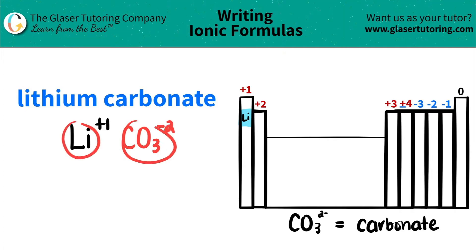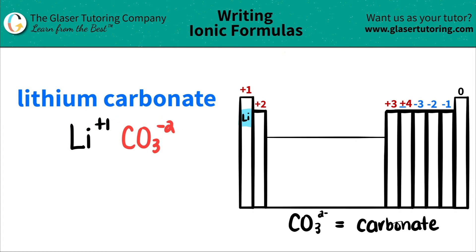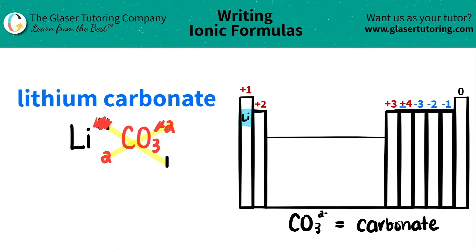Now I have both components and both charges. We do a little trick where we crisscross the charges to determine how many of each component we need. So this plus one crisscrosses down, telling me I only need one of the carbonates. And this negative two crisscrosses down, telling me I need two of the lithiums. When you do this crisscrossing, don't worry about the positives or negatives — just write out the number, because these will be used as your subscripts.